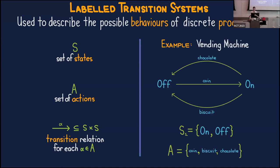As a simplified example, consider a transition system modeling a vending machine. The set of states is just on and off. There are three possible actions: coin is inserting a coin, biscuit is asking it to dispense a biscuit, and chocolate is asking it to dispense a chocolate. Starting in state off, you can insert a coin and the system goes into the on state. From on you can request chocolate or biscuit, both of which take the system back to the off state.